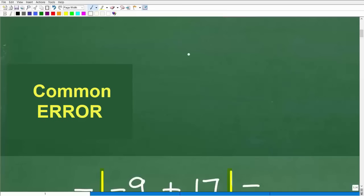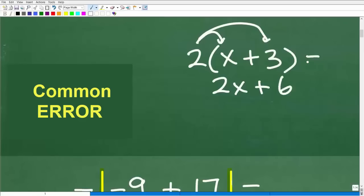So if I had 2 times x plus 3. Now, for those of you that know some basic algebra, you would say, okay, I can use the distributive property to go 2 times x. And that is correct. And then 2 times 3 would be 6. So 2 times x plus 3 is equal to 2x plus 6.